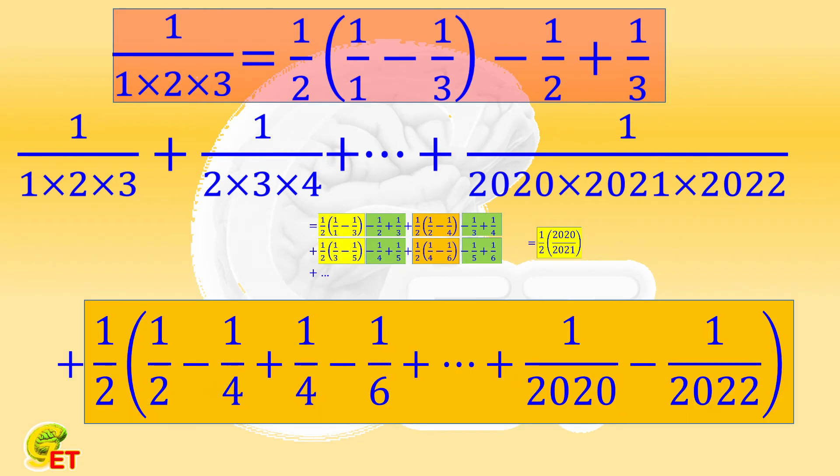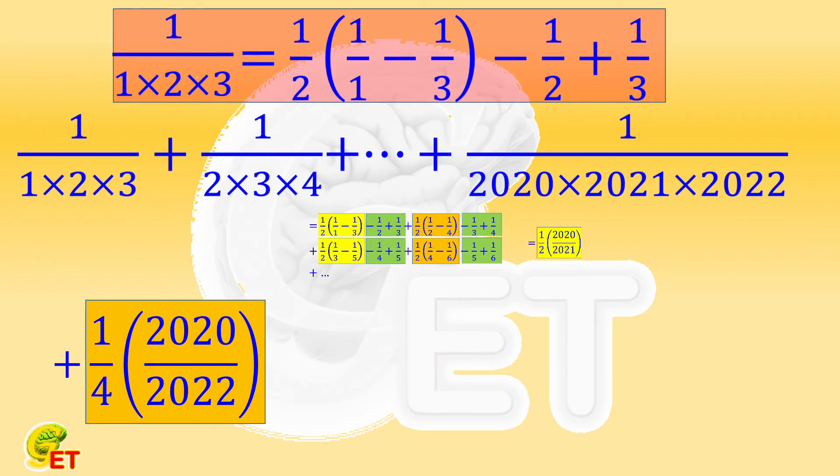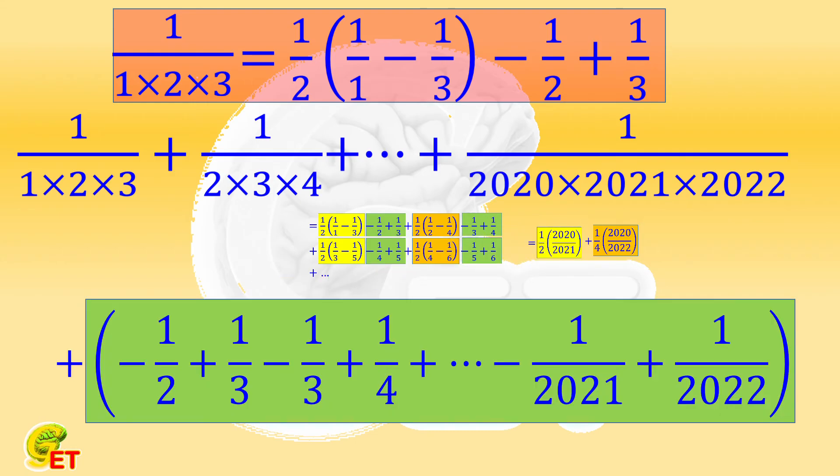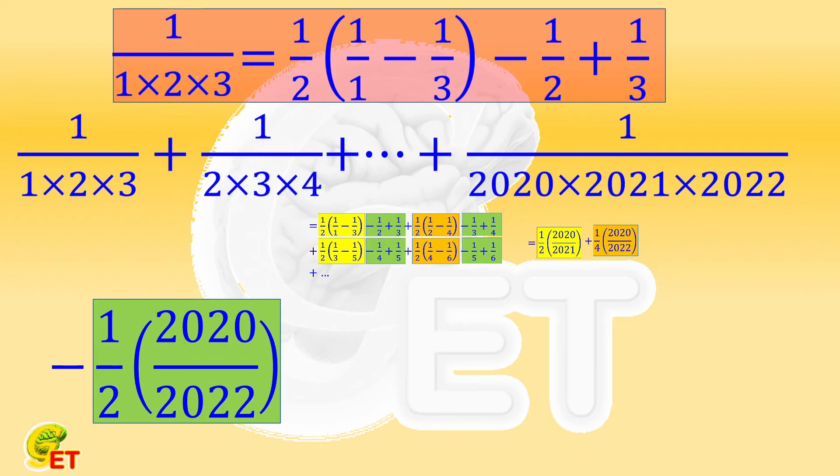The orange term has the similar form. Its result equals to a quarter of 2020 over 2022. The green terms has the similar form too. Its result equals to minus half of 2020 over 2022.